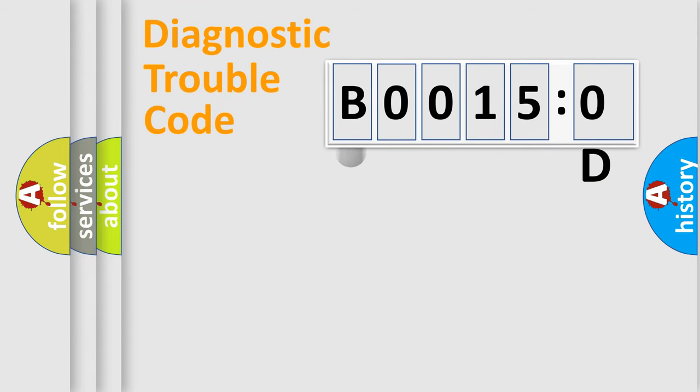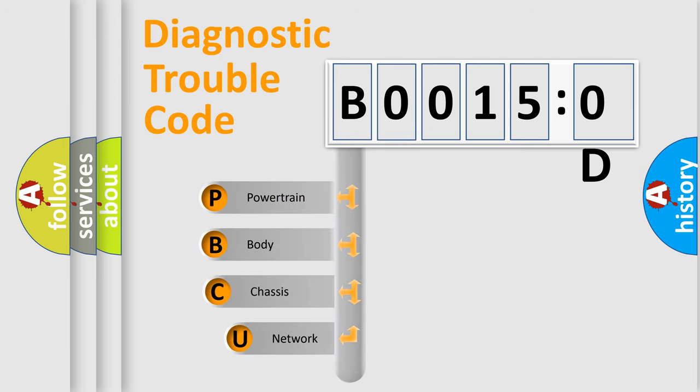First, let's look at the history of diagnostic fault code composition according to the OBD2 protocol, which is unified for all automakers since 2000. We divide the electric system of automobile into four basic units.